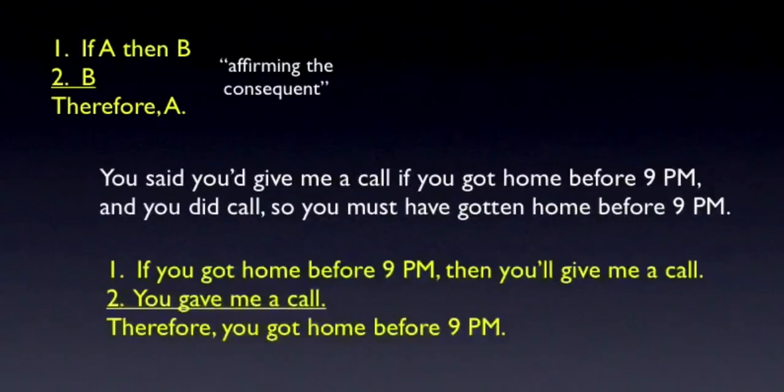Here's the argument written in standard form, where we've been careful to note that the antecedent of the conditional is what comes after the if. Now it's clearer that the argument has the form of affirming the consequent, which we know is invalid.